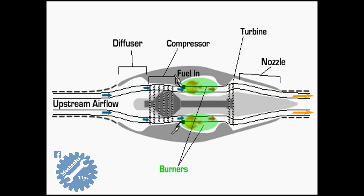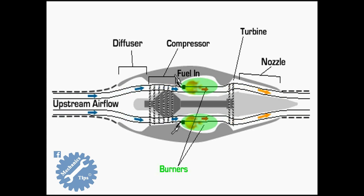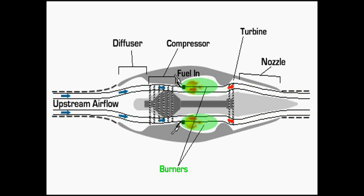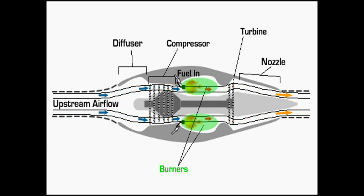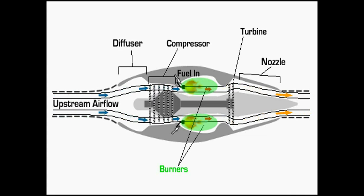Another important part of a jet engine is the burner. A burner combusts fuel in the compressed air to add thermal energy to the air by increasing its temperature. This extra energy is necessary to operate the turbine that drives the compressor. It also allows the air to be accelerated to a higher velocity, creating more thrust.